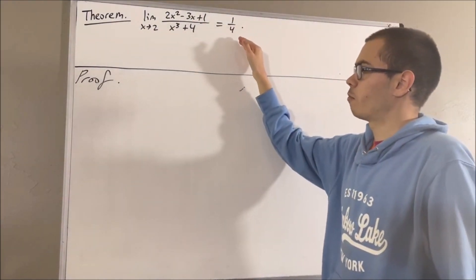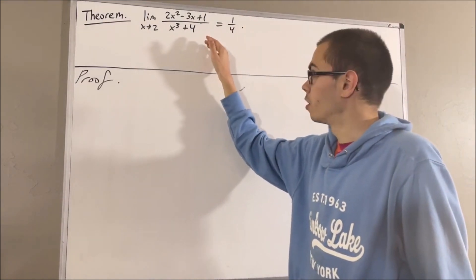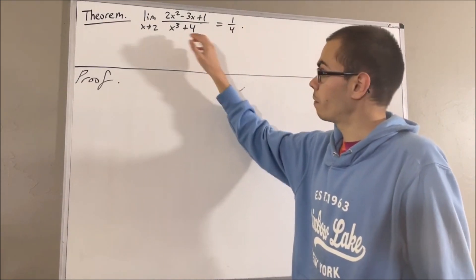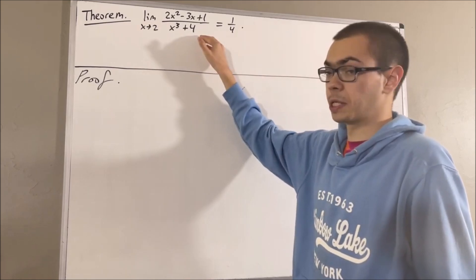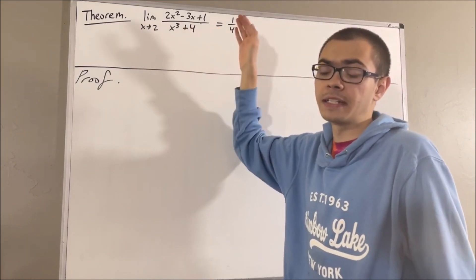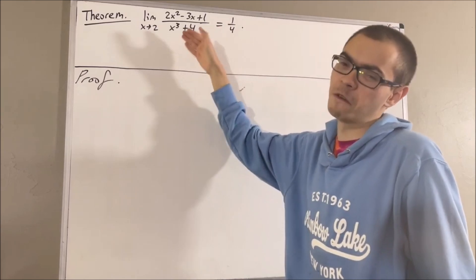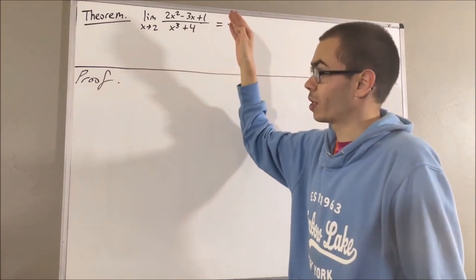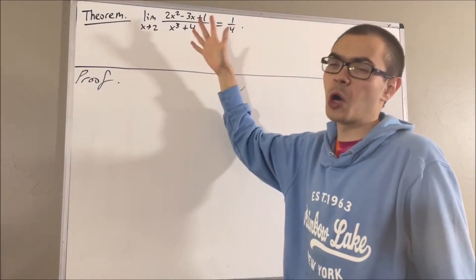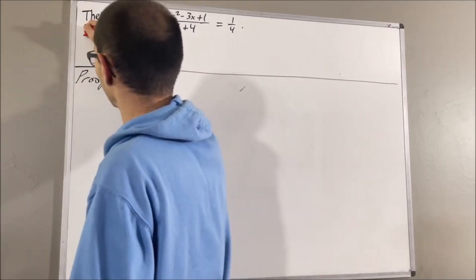We're dealing with the limit of a function. Which function exactly? Well, this expression could take in any value of x that is not equal to the negative cube root of 4. So we're going to say that the domain of our function is all real numbers, excluding the negative cube root of 4.